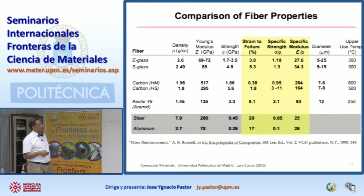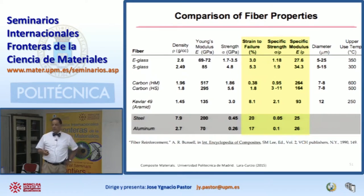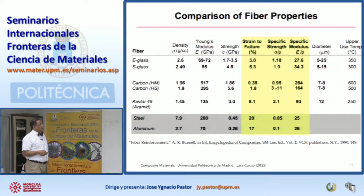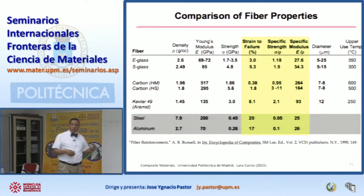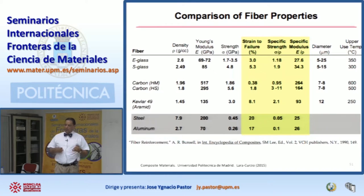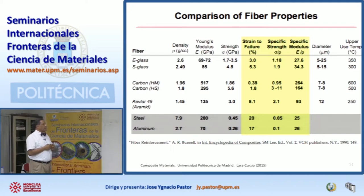The other important property is maximum temperature for utilization. In the case of glass, you can go up to 350°C. Carbon in the absence of oxygen can go up to 2,000–3,000°C; with oxygen present, up to about 600°C before it oxidizes and loses properties. With Kevlar, you can only go up to 250°C. This is just a sampler — there are probably 200 types of fibers today, including silicon carbide fibers, Nicalon fibers, Tyranno fibers, and Spectra fibers for ballistic applications.